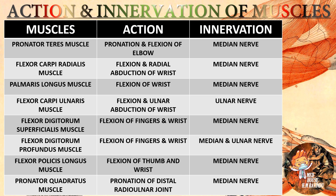Pronator teres action is pronation and flexion of elbow, innervated by the median nerve. Flexor carpi radialis action is flexion and radial abduction of wrist, innervated by the median nerve. Palmaris longus action is flexion of wrist, innervated by the median nerve. Flexor carpi ulnaris action is flexion and ulnar abduction of wrist, innervated by the ulnar nerve. Flexor digitorum superficialis action is flexion of fingers and wrist, innervated by the median nerve. Flexor digitorum profundus action is flexion of fingers and wrist, innervated by the median and ulnar nerve. Flexor pollicis longus action is flexion of thumb and wrist, innervated by the median nerve. Pronator quadratus action is pronation of the distal radioulnar joint, innervated by the median nerve.